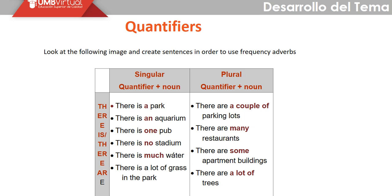Now let's move to quantifiers with singular and plural nouns. Using 'there is' and 'there are': 'There is a park.' 'There are a couple of parking lots.' 'There is an aquarium.' 'There are many restaurants.' 'There is one pub.' 'There is not a stadium.' 'There is much water.' 'There is a lot of grass in the park.' 'There are some apartment buildings and there are a lot of trees.'